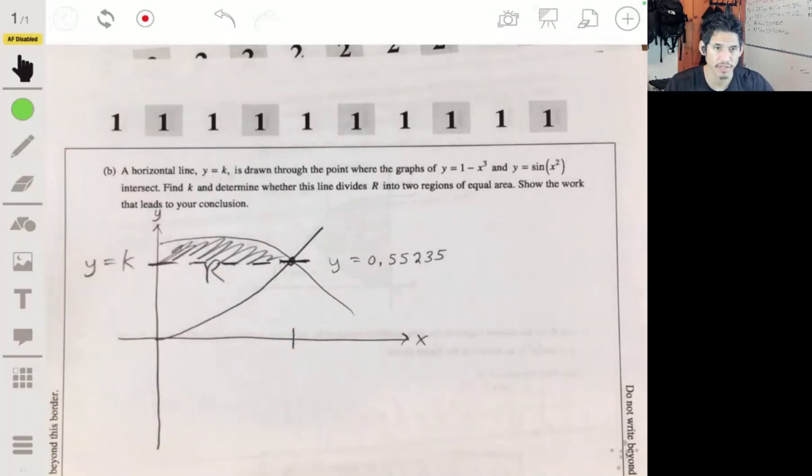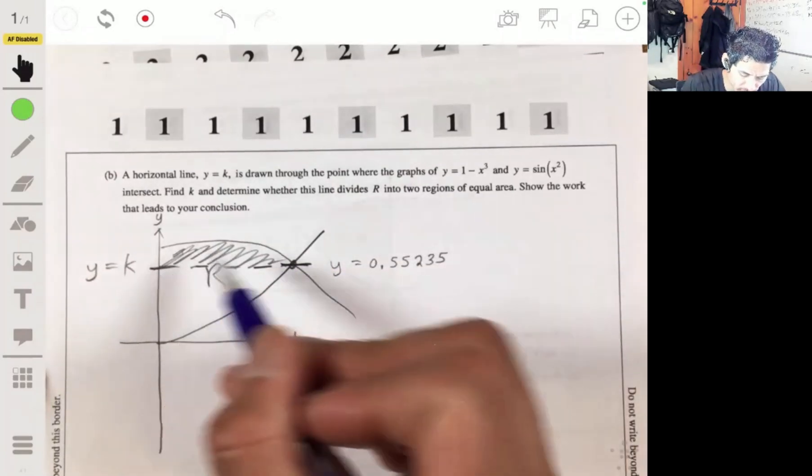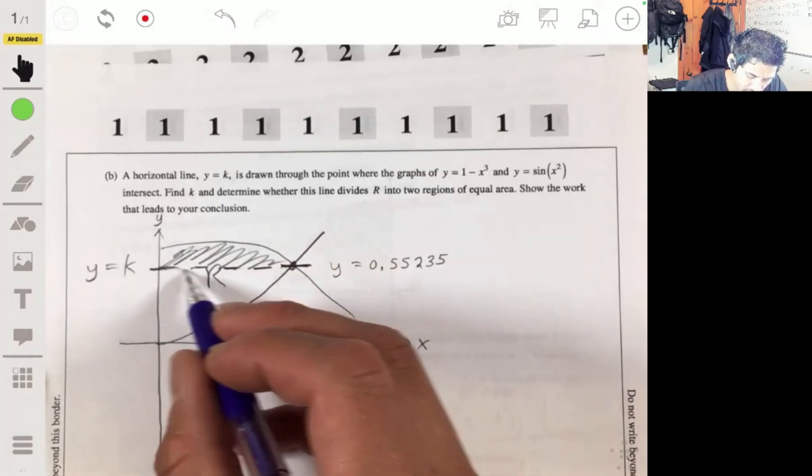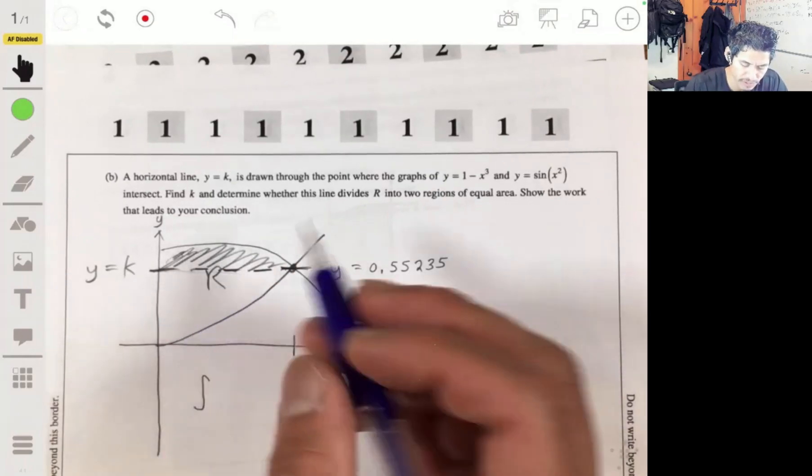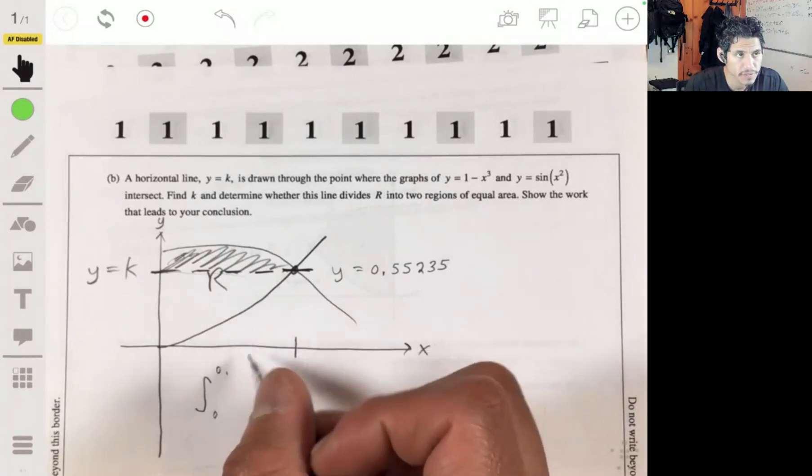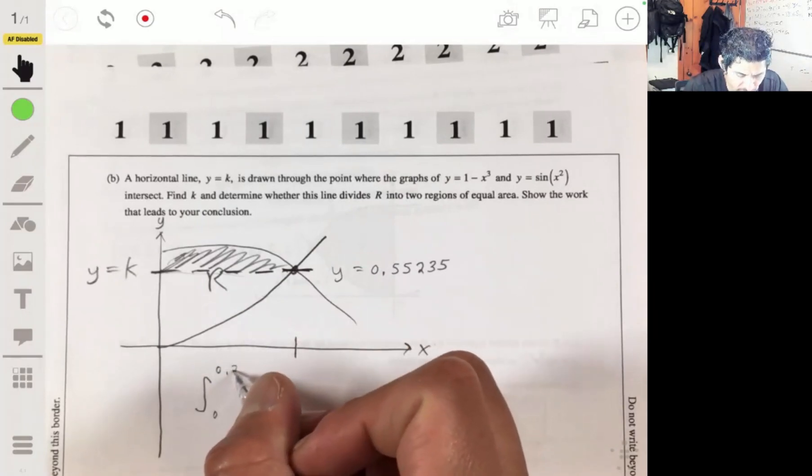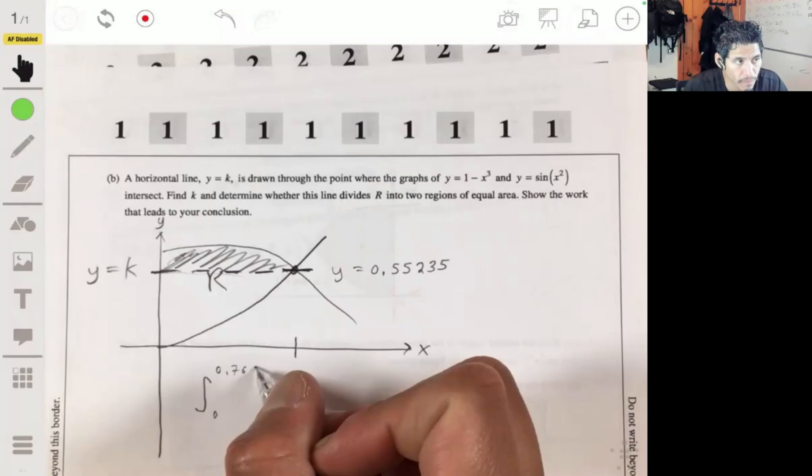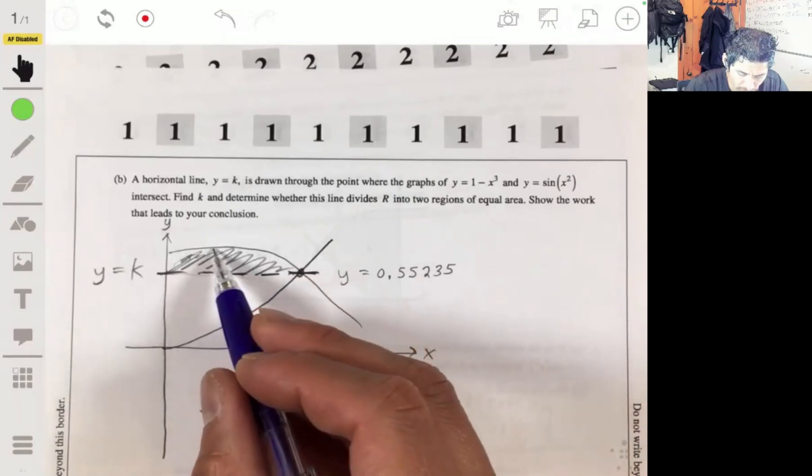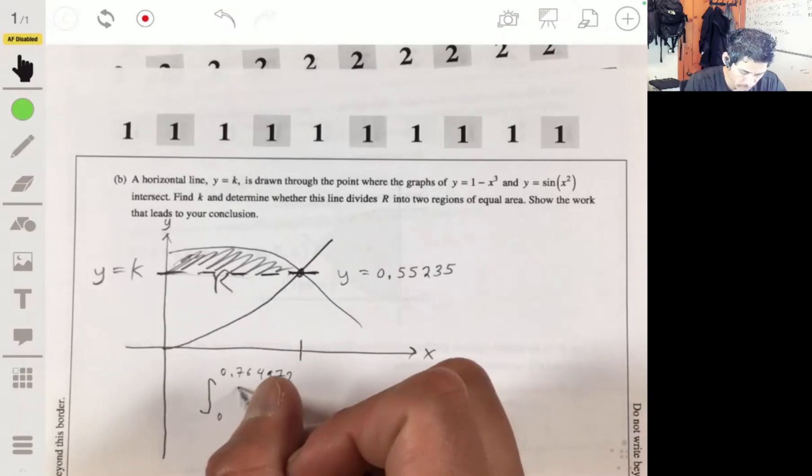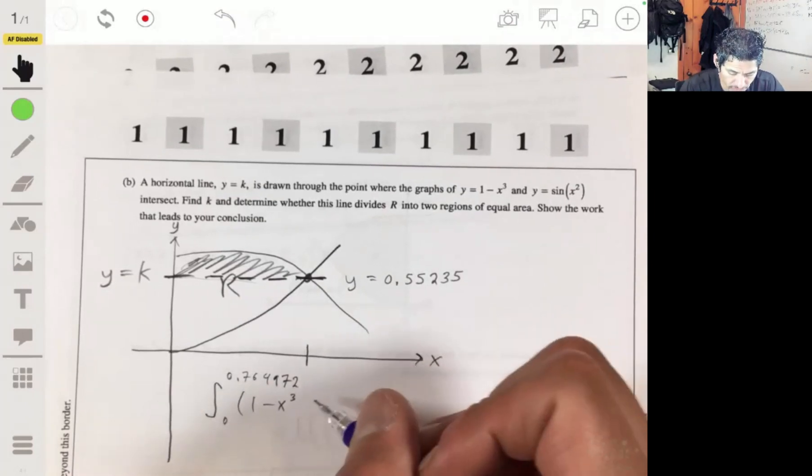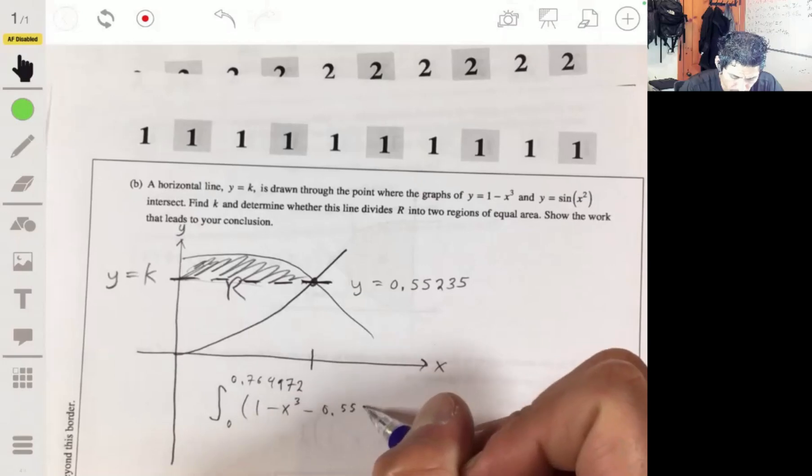Now, let's go ahead and just integrate this from 0 to this point. And from there, we're going to also then subtract this line. So we'll set up our integral for this top portion to be from 0 to 0.764972. And that'll be the 1 minus x cubed minus the 0.55235.